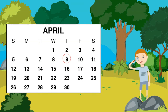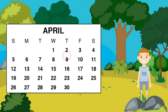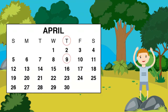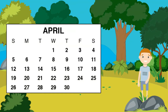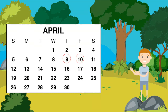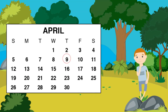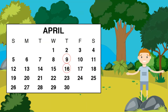Find April the 9th on the calendar. What day of the week is April 9th? Awesome! April 9th is on a Thursday. We look up above the 9 on the calendar to find the day of the week. What day comes after April 9th? Yes! April 10th comes after April 9th. April 10th is the next day on the calendar. What day is exactly one week after April 9th? April 16th is one week after April 9th. To find the next week, you just move down to the very next row.